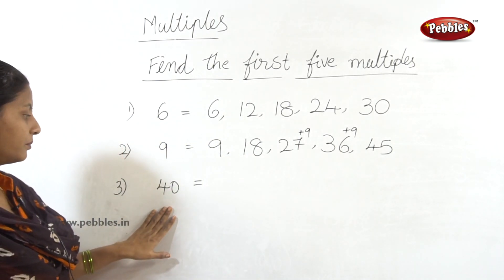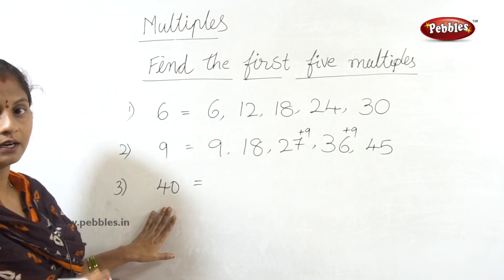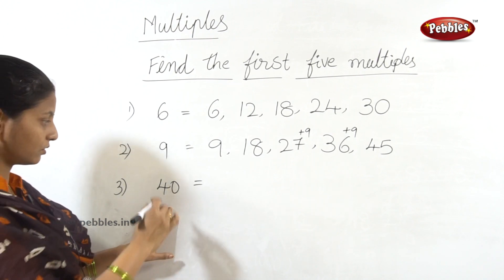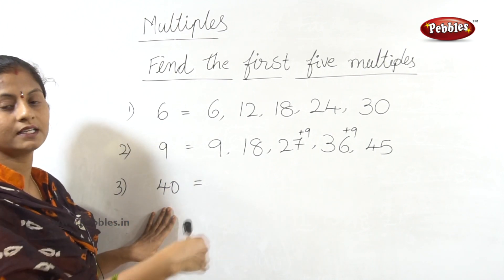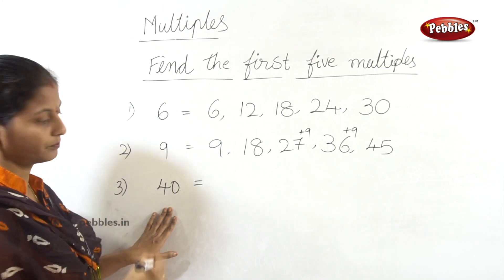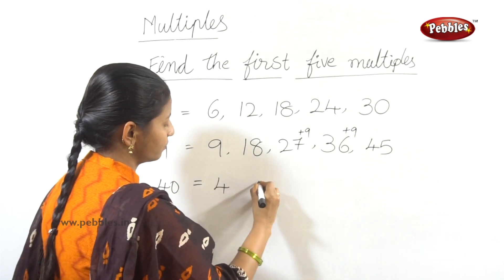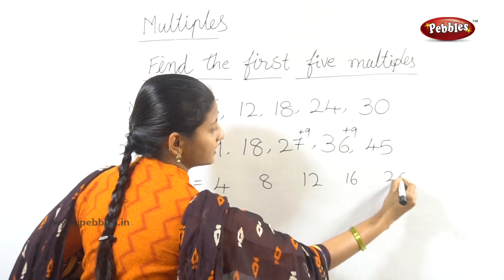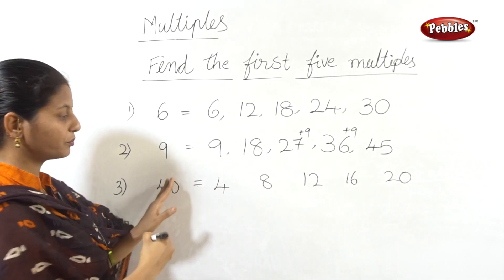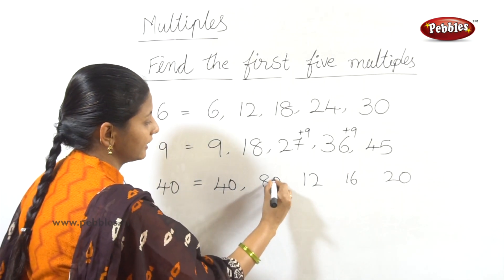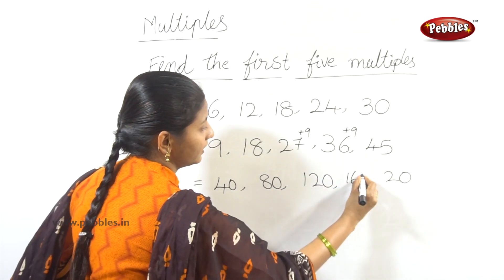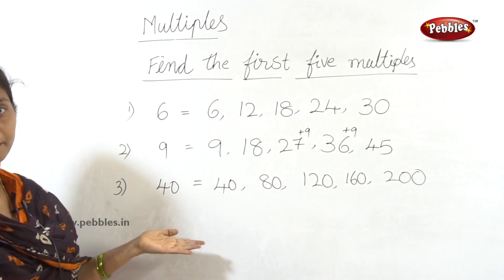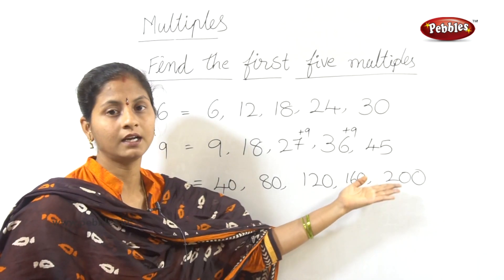Next, first 5 multiples of 40. Since 10 fours are 40, we use the 4 times table and add a zero. 4 ones are 4, 4 twos are 8, 4 threes are 12, 4 fours are 16, 4 fives are 20 — then adding zero: 40, 80, 120, 160, 200.